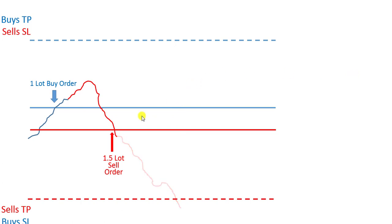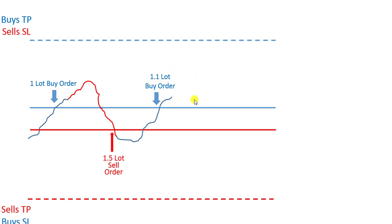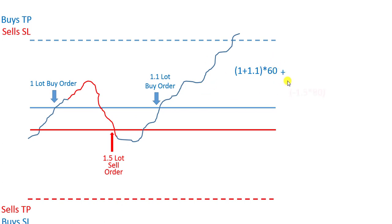Now imagine that after this iteration the price does not go in our favor and it goes back up, hitting the buy line again. In this case we send another buy order, for example 1.1 lots — and I will explain how to calculate this lot size; it is not complicated. After sending this 1.1 lot buy order, the price goes in our favor and hits the buy take profit or sell stop loss. What would be our profit? We have two open buy orders, one of 1 lot and another of 1.1 lots, and both gain 60 pips, plus minus 1.5 multiplied by 80. The result would be 6 units, and still we would gain some money.